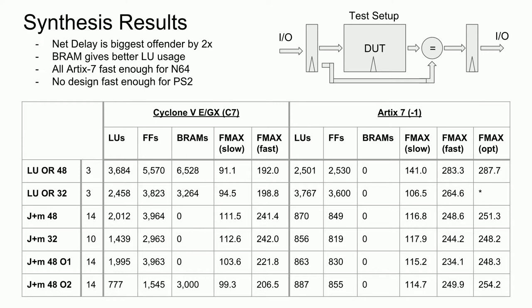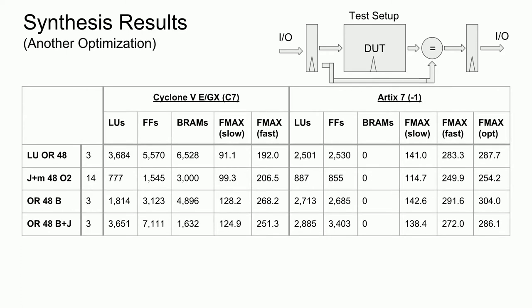The next thing I tried was implementing only a reduced logic hit tester with the majority of TLB entries stored in a block RAM — listed as OR48B. This should reduce the number of registers needed for the entries and put less strain on the control logic. The first thing we notice is a massive speedup compared to the previous LUOR and optimized cases, reaching a maximum Fmax on the Artix 7 of 304 MHz — 10 MHz faster than the PlayStation 2's R5900 processor. It should be noted, however, that this implementation is not the full TLB and will not provide the functionality needed by the processor, though it did confirm the right direction.